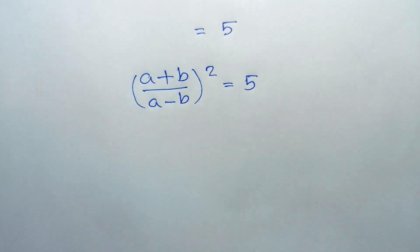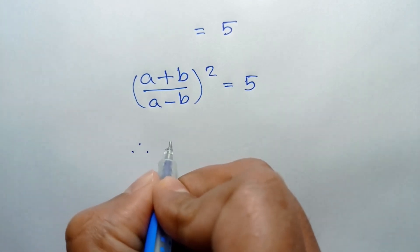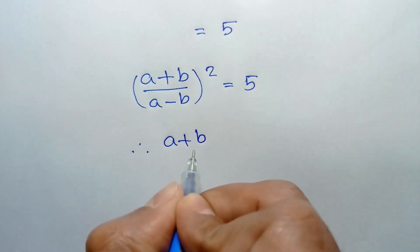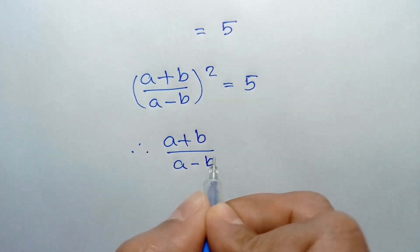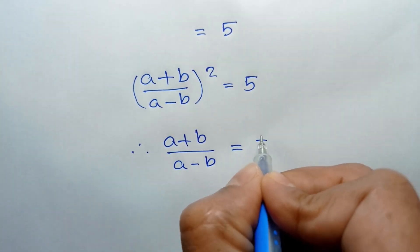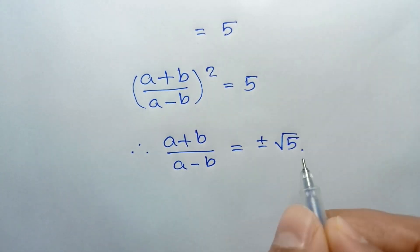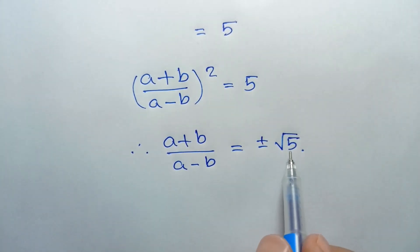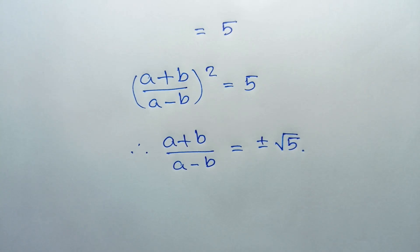Taking the square root of both sides, we get (a+b)/(a-b) = ±√5. So this is the value of (a+b)/(a-b). If you like this video, please subscribe to my channel. Thanks for watching.